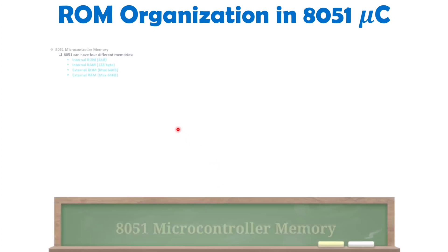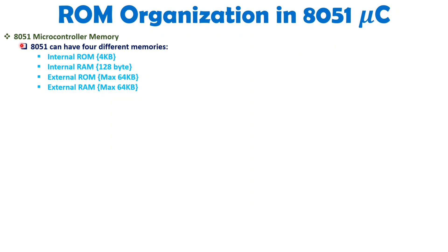8051 has 4 different categories of memories. Internal ROM has a size of 4 KB, and externally we can interface 64 KB of ROM with 8051. 8051 also has internal RAM of size 128 bytes, and externally we can interface 64 KB of RAM. If the programmer needs extra memory, they can interface external RAM and ROM with 8051.